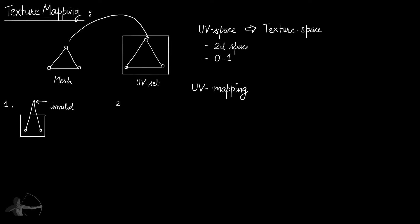The second rule is to try to consume as much UV space as possible while assigning coordinates to the vertices. For example, if I assign all the coordinates to the vertices in only a small portion of the UV space, only a small portion of the texture will be mapped onto the complete mesh. So try to consume as much space as possible so that we can map the complete texture onto the mesh and don't waste any UV space.